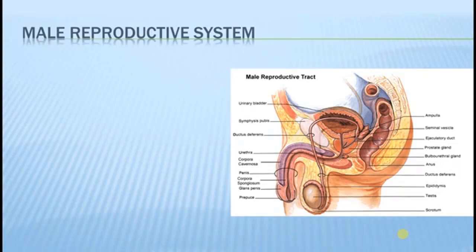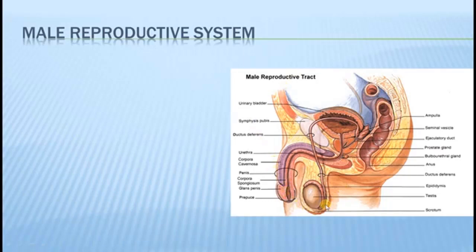Now first, let us try to understand the parts of the male reproductive system. So here, you are able to see the sagittal section of the male pelvis. So mainly, you are able to see the testis which is present inside the scrotum — that is the male gonads.